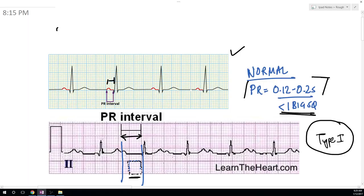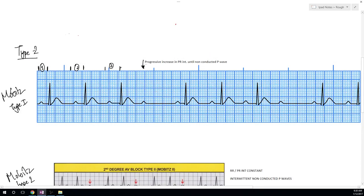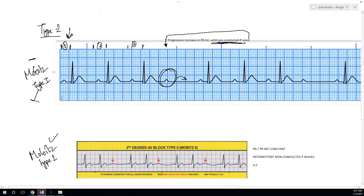In Mobitz type 1, we have progressively increase in the PR interval until there is a P wave which is not conducted. So here as you can see, first the PR interval is this much, here it's increased, here it's more increased compared to the previous ones, and then there is an isolated P wave which is not conducted. That is type 1.